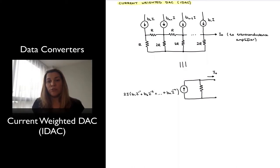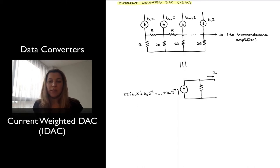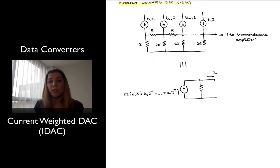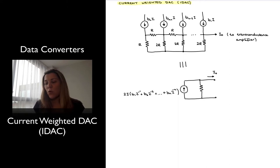Another common configuration for DACs is that of the weighted current DAC, or IDAC. It basically uses, or can be built using, the same principle as the R2R ladder DAC network that we previously saw, but instead of using a reference voltage and switching it based on the different bits of the digital input word, we're going to use a reference current.